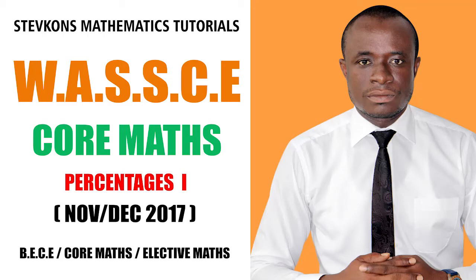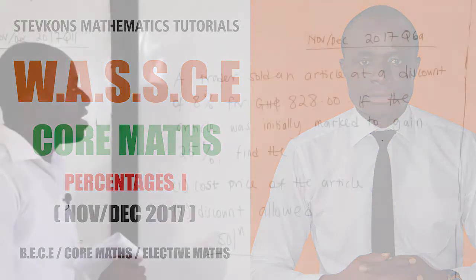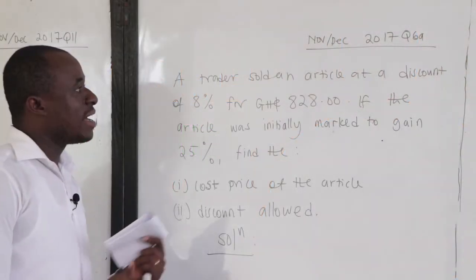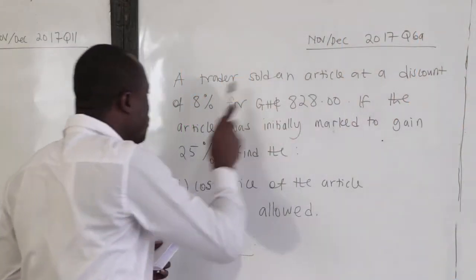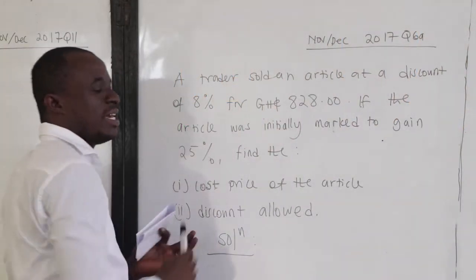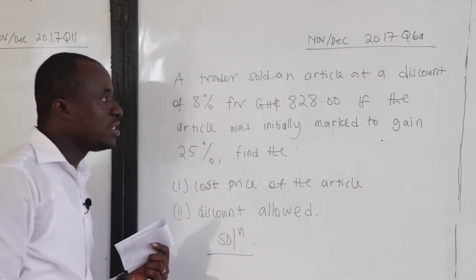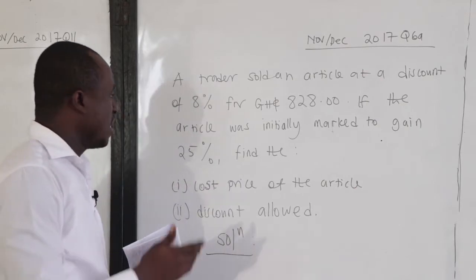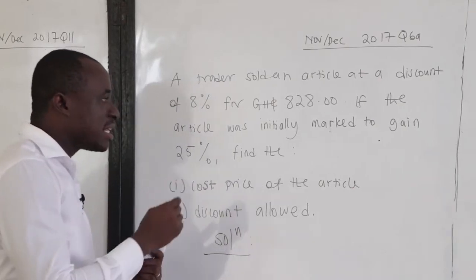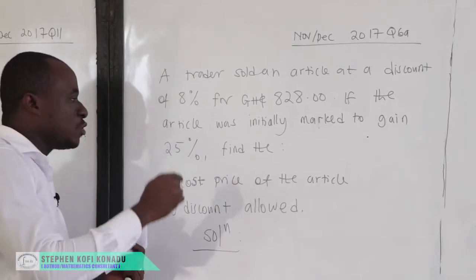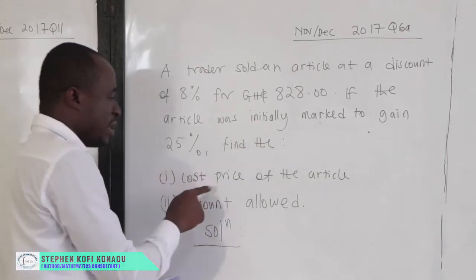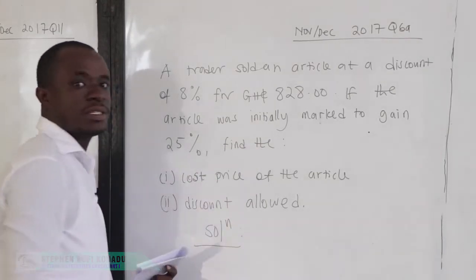Let's look at BECE 2017, question number six A. A trader sold an article at a discount of eight percent for 828 cedis. If the article was initially marked to gain 25 percent, find the cost price of the article.